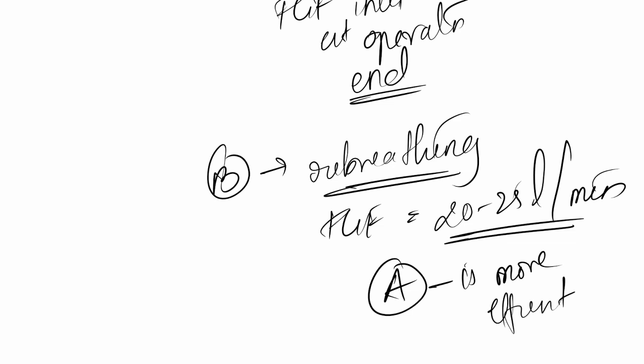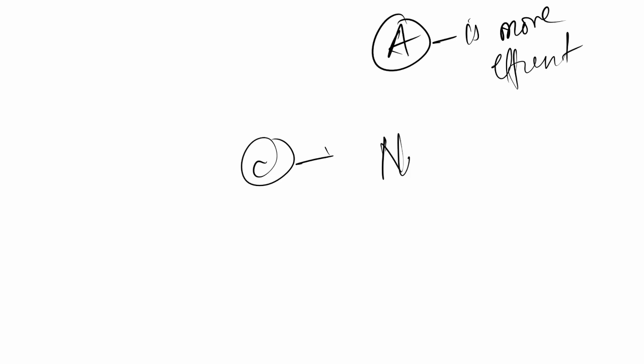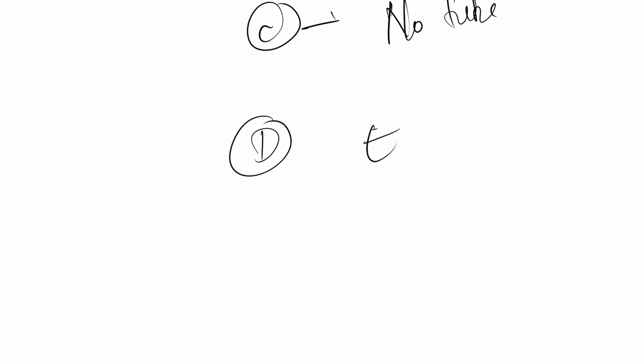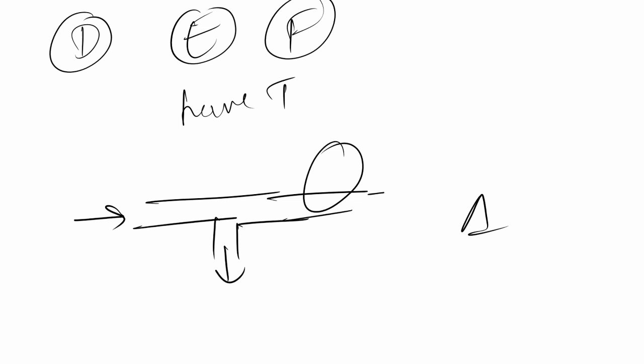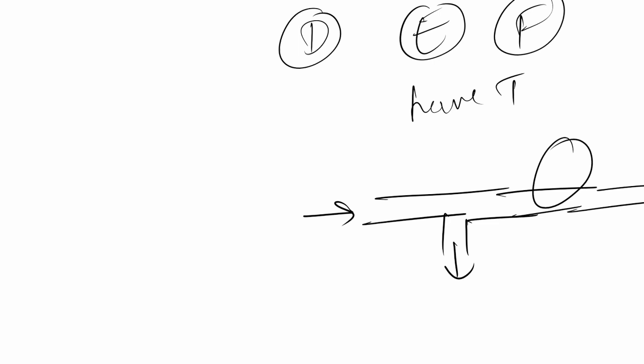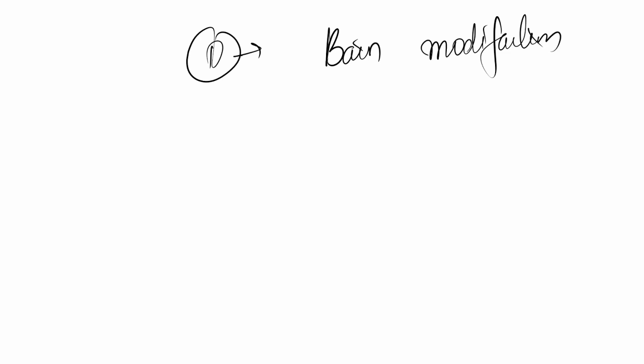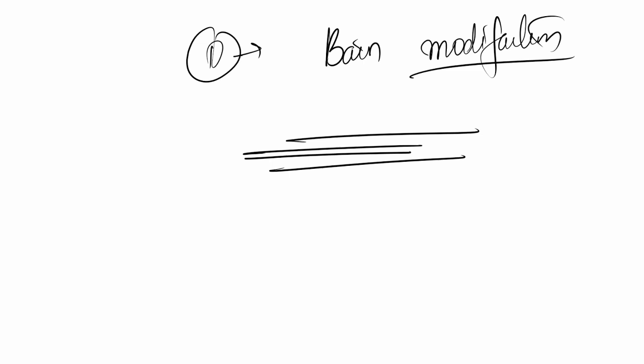Circuit C is a modification of B but without the corrugated tube. Circuits D, E, and F have T-piece modifications. A T-modification refers to a T-shaped junction where one arm is the inlet, one is the outlet, and one connects the reservoir to the mask. Circuit D has a modification called the Bain modification, in which the corrugated tube is replaced by a coaxial design: an outer tube and an inner tube, where the inner tube is the fresh gas flow input and the outer tube is the output.